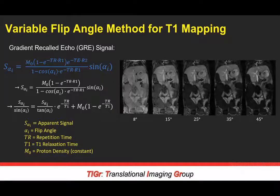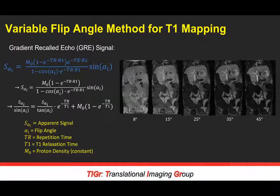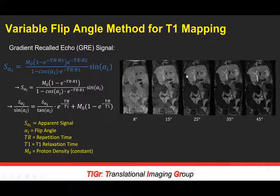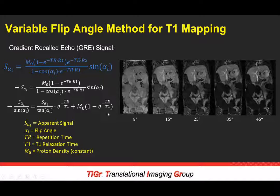How do we perform T1 mapping with this gradient recall echo protocol? We require five different flip angles: 8, 15, 25, 35, and 45 degrees. You can see the impact on signal quality as the flip angle changes. We then take the GRE signal equation, reconfigure it to get a fit for apparent signal in the image, and relate that to known parameters such as repetition time and proton density. We then back-solve for the T1 relaxation time with knowledge of the flip angle.